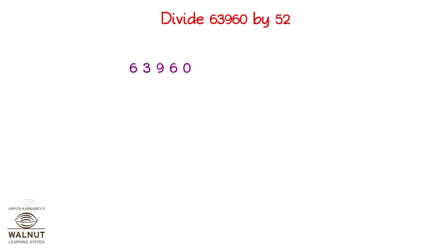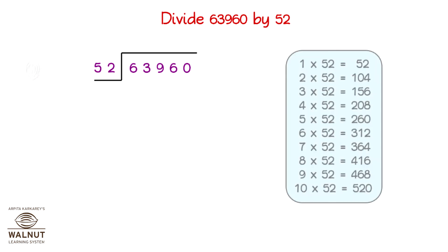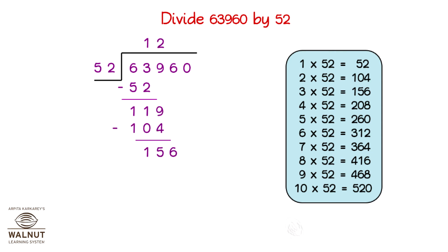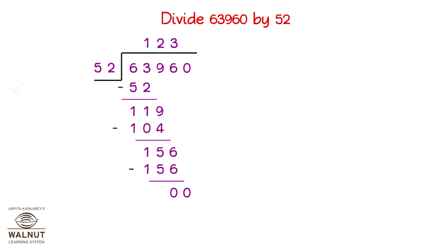Divide 63,960 by 52. We write the table of 52, then we start dividing. The remainder is 0, so we know our answer is correct.